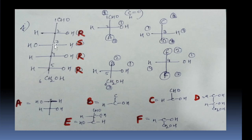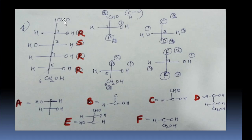Now for the 3rd carbon: group C is above and group D is below. OH always gets number 1, and H gets number 4. The problem is that both C and D have H and OH. We look at the next carbon in each group: one has CHO (two double bonds with oxygen — two oxygens), and the other has CHO and C. CHO gets priority, so that group is given number 2, the other is number 3. Going 1, 2, 3 we get R, but the lowest priority is on the horizontal, so the answer is S.